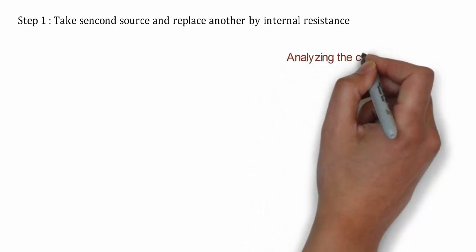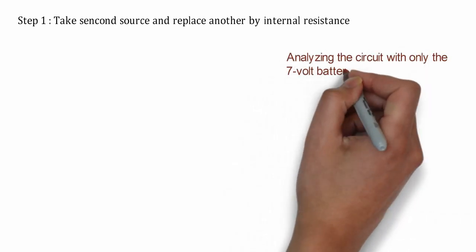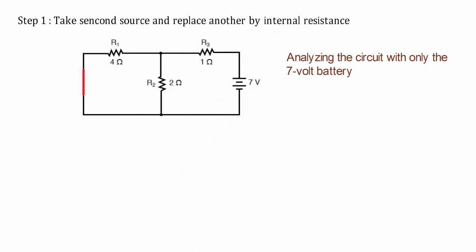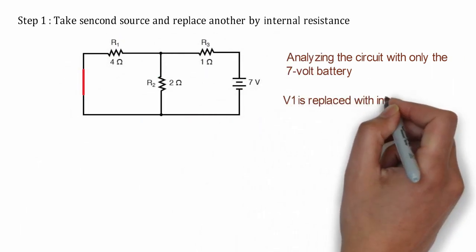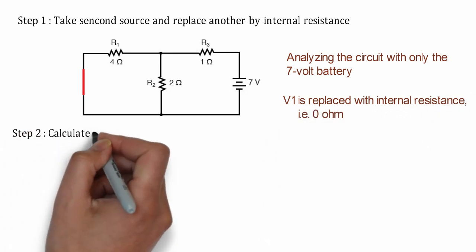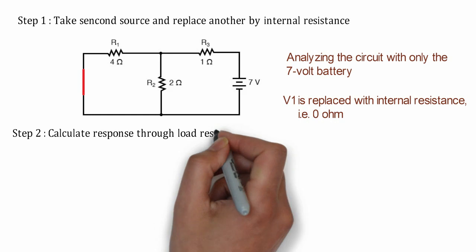Here, circuit is connected with 7V battery and other than that source is replaced with their internal resistance. As did earlier, in this step, we need to find response of load resistance.